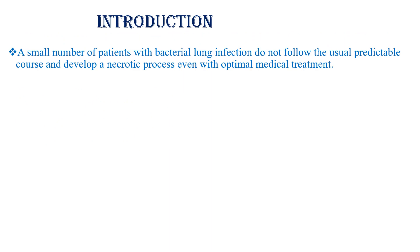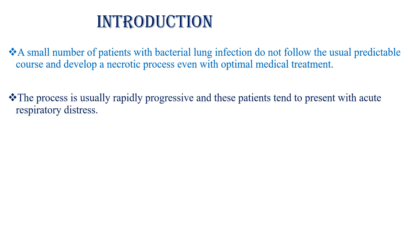A small number of patients with bacterial lung infection do not follow the usual predictable course and develop a necrotic process even with optimal medical treatment. Normally, we expect improvement after 48 to 72 hours of optimal medical treatment after we admit a child or a patient with community-acquired pneumonia. But those with necrotizing pneumonia do not follow this usual predictable course. The process is usually rapidly progressive and these patients tend to present with acute respiratory distress.